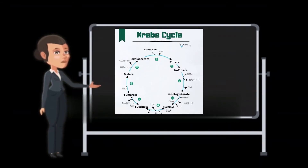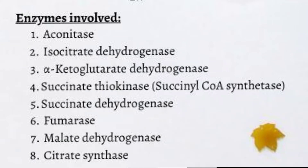The eight enzymes of the Krebs cycle are: citrate synthase, aconitase, isocitrate dehydrogenase, alpha-ketoglutarate dehydrogenase, succinate synthase, succinate dehydrogenase, fumarase, and malate dehydrogenase.